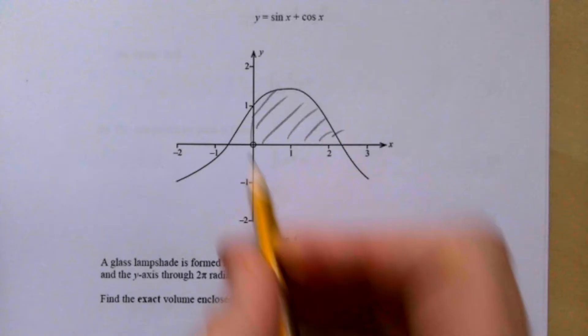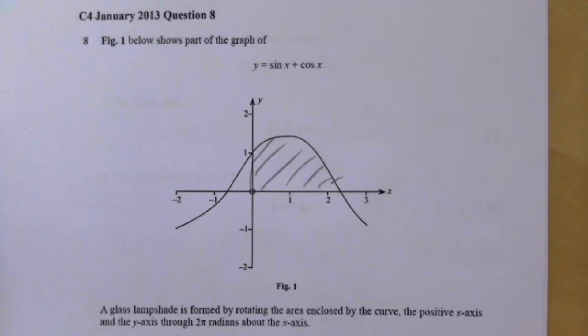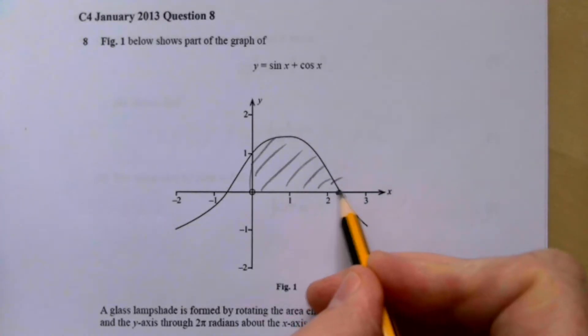Now that we're going to be rotating around, that makes sense because it says the y-axis, so it's going to be between here and here. So we first of all need to find this point here so we know where to integrate between.